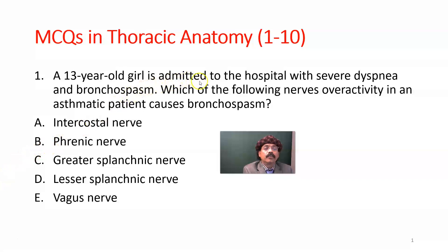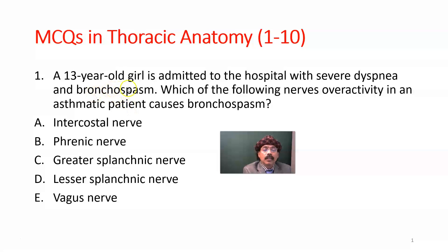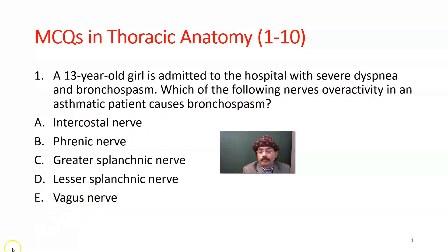Question number 1. A 13-year-old girl is admitted to the hospital with severe dyspnea and bronchospasm. Which of the following nerves causes bronchospasm in an asthmatic patient? Options: intercostal nerve, phrenic nerve, greater splanchnic nerve, lesser splanchnic nerve, vagus nerve. This is an autonomic parasympathetic activity because of bronchospasm and dyspnea. Bronchospasm is associated with excessive secretion from the bronchial glands, causing difficulty in breathing. The nerve is the vagus nerve.